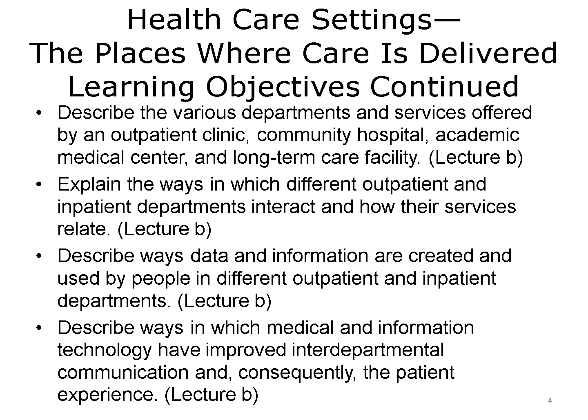Additional objectives for this unit are to describe the various departments and services offered by an outpatient clinic, community hospital, academic medical center, and long-term care facility. Explain the ways in which different outpatient and inpatient departments interact and how their services relate. Describe ways data and information are created and used by people in different outpatient and inpatient departments, and describe ways in which medical and information technology have improved interdepartmental communication and, consequently, the patient experience.